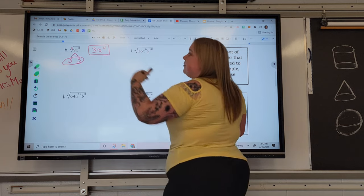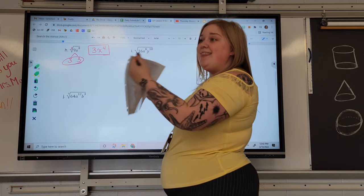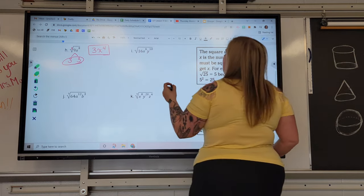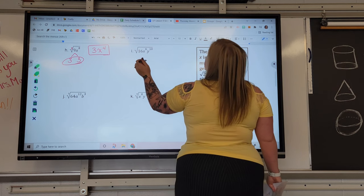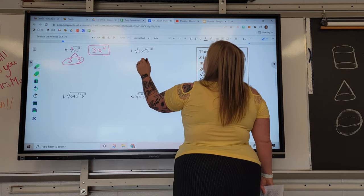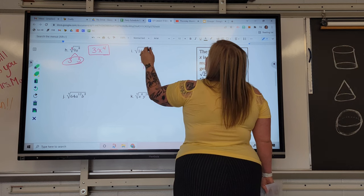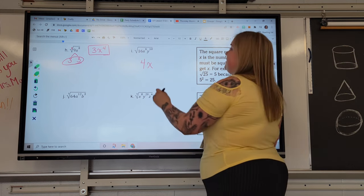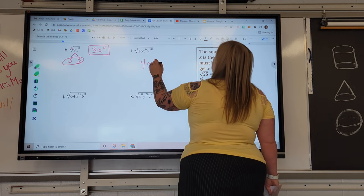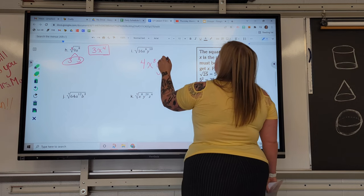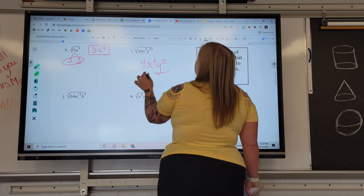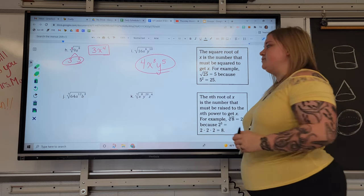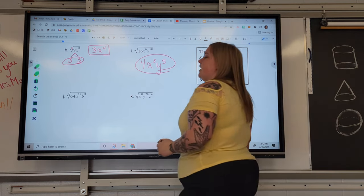But, like that one, cleans up real neat. That might not always be the case. Remember, if you have leftovers, that's okay. They just stay underneath the radical sign. So here for this one, what's the square root of 16? How many pairs of X's do I have if I have 6 X's? That's 3 pairs. And 10 Y's makes 5 pairs of Y's.